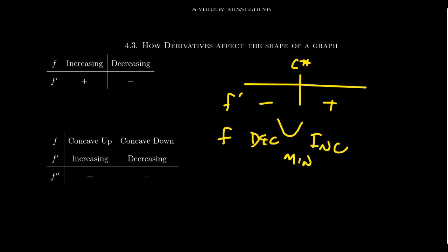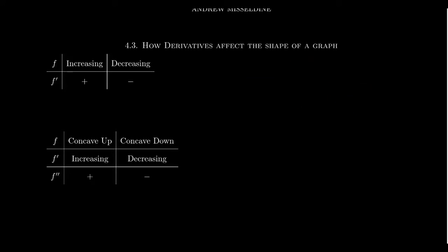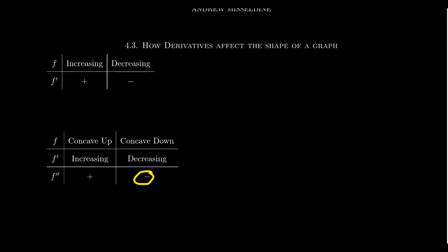That's the first derivative test. We also saw in lecture 33 that the second derivative affects the shape of the graph of the original function. Because the second derivative, as the derivative of the first derivative, when the second derivative is positive, that means the first derivative is increasing, which means the original function is concave up. Similarly, when the second derivative is negative, the first derivative is decreasing, which forces the original function to be concave down.